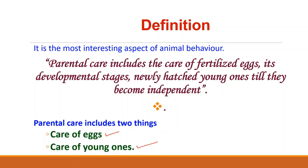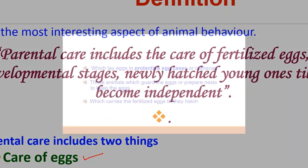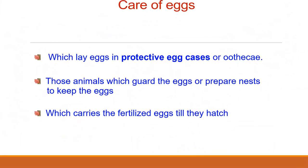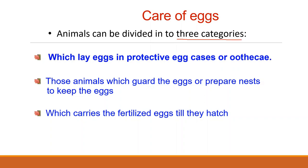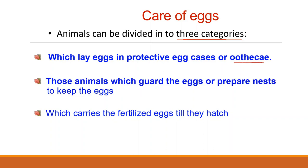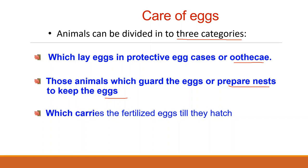Let us discuss one by one. First of all, care of the eggs. As far as this aspect of animal behavior is concerned, animals can be categorized into three groups: those animals which lay eggs in protective egg cases or ootheca; second, those animals which guard the eggs or prepare nests to keep the eggs; and the third group is those animals which carry the fertilized eggs till they hatch.